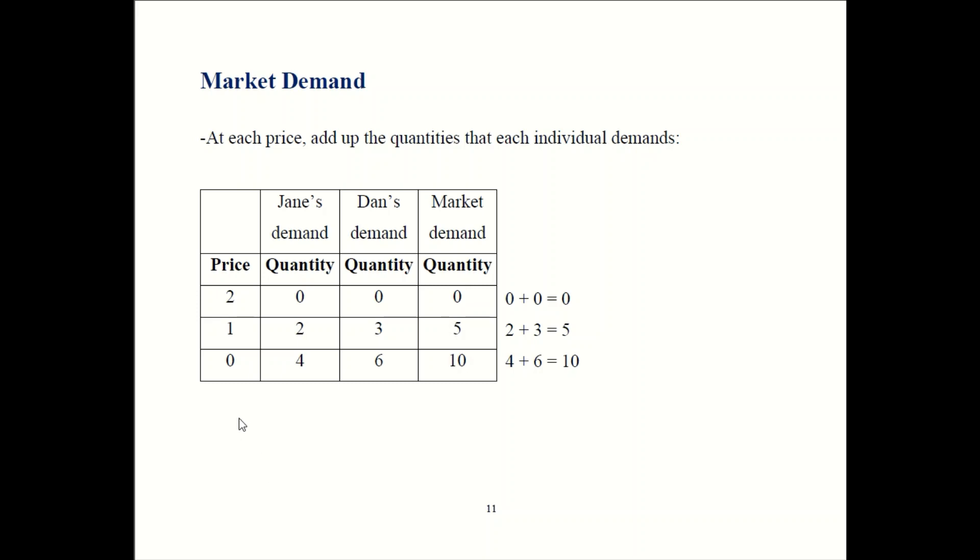Similarly, if the price is zero, Jane is going to buy four and Dan is going to buy six. Market demand, total demand is going to be six plus four, which is ten. So you can see how this is constructed.